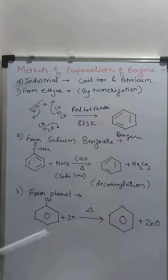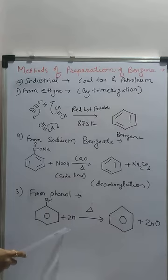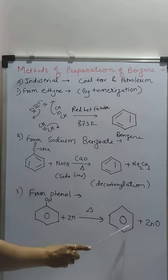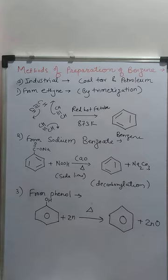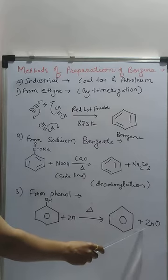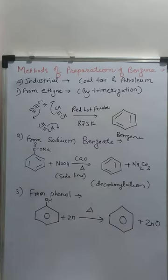The next method is preparation of benzene from phenol. When vapors of phenol are passed over heated zinc, it gives benzene. The byproduct is zinc oxide.